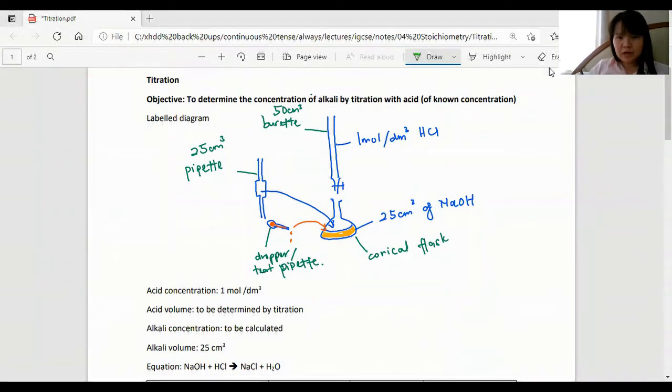So the concentration of the HCl is 1 mole per dm cubed and we have 25 centimeter cubes of NaOH. We know that the equation for sodium hydroxide and hydrochloric acid is 1 is to 1 here.